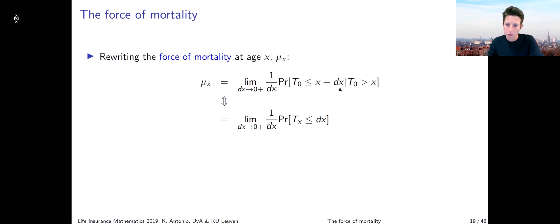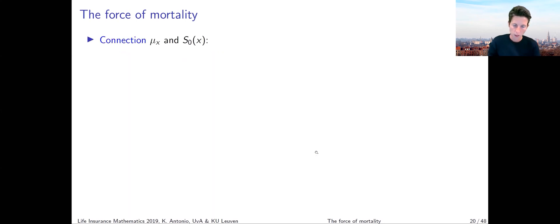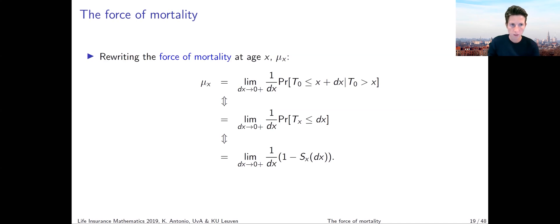You can look at these steps more closely after class. We have our conditional probability, which we can rewrite as the probability that Tₓ is smaller than or equal to dx — because of the connection between Tₓ and T₀ explained earlier. The probability that Tₓ is less than or equal to dx equals one minus the survival function of the x-year-old evaluated at dx. Any thoughts yet about how a general econometrician or statistician would call this μₓ? I'm looking for two words.